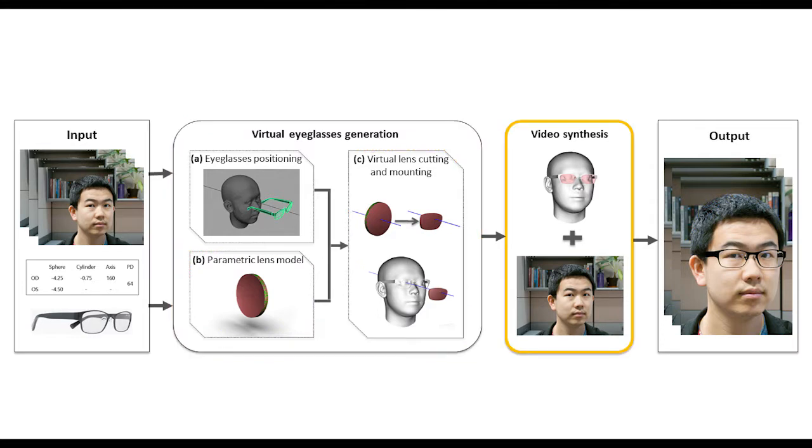In the video synthesis stage, we render the virtual eyeglasses and insert them into the input image sequence, taking into account effects of refraction, reflection, and shadows. The output is a synthesized video where the user is wearing the virtual prescription eyeglasses. We will now describe each step in detail.